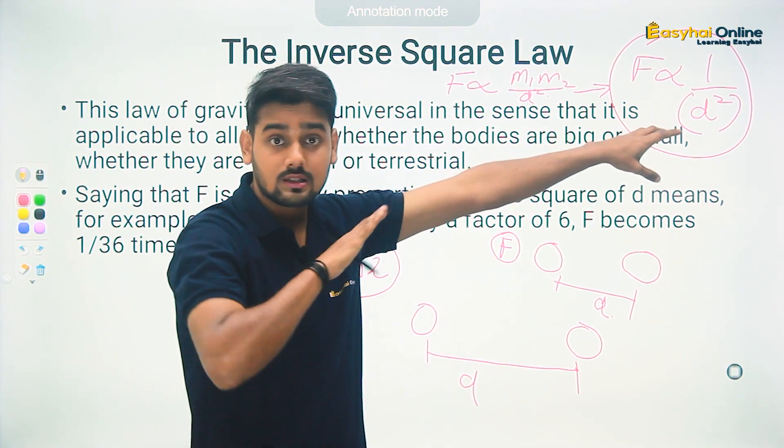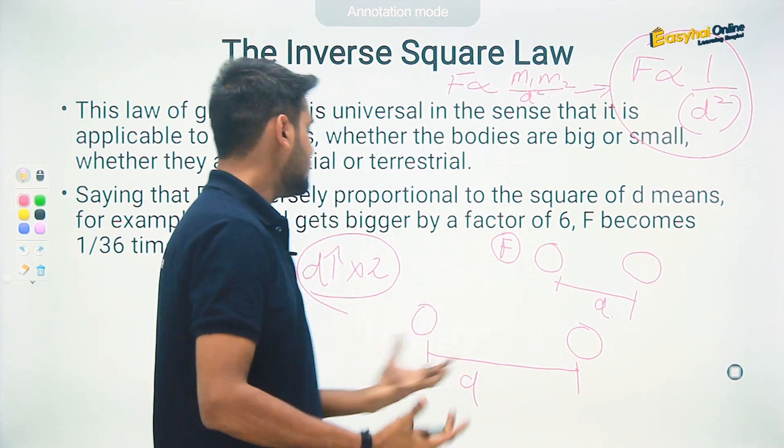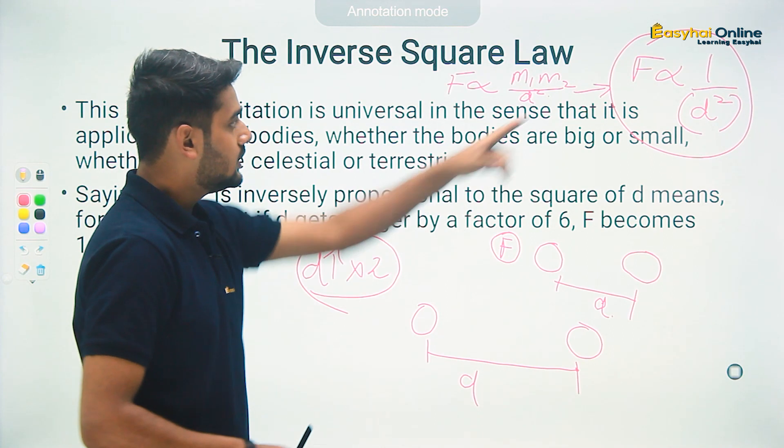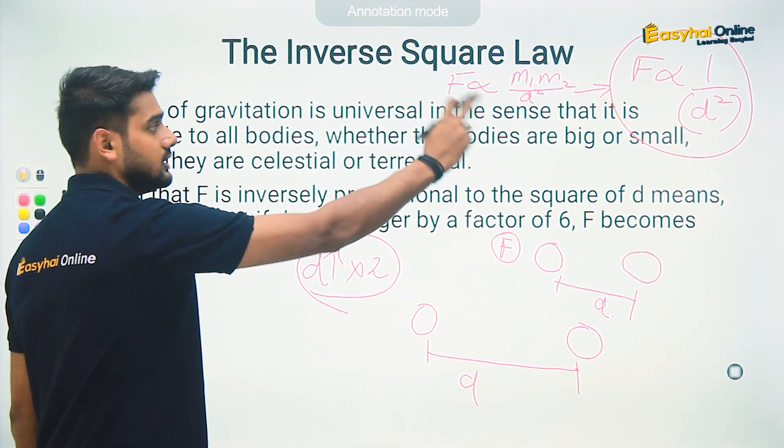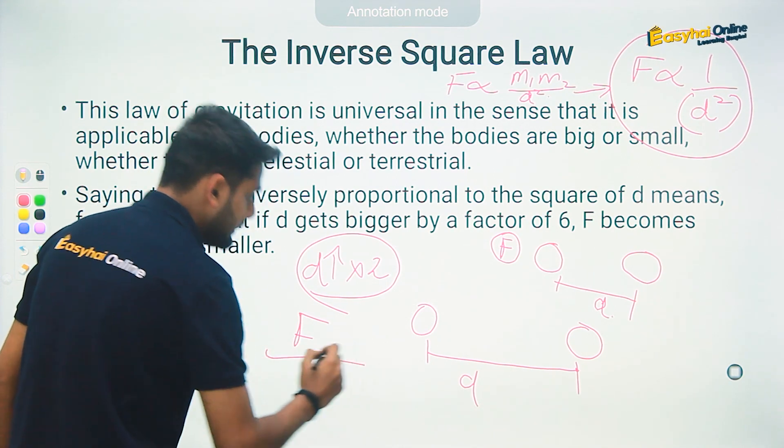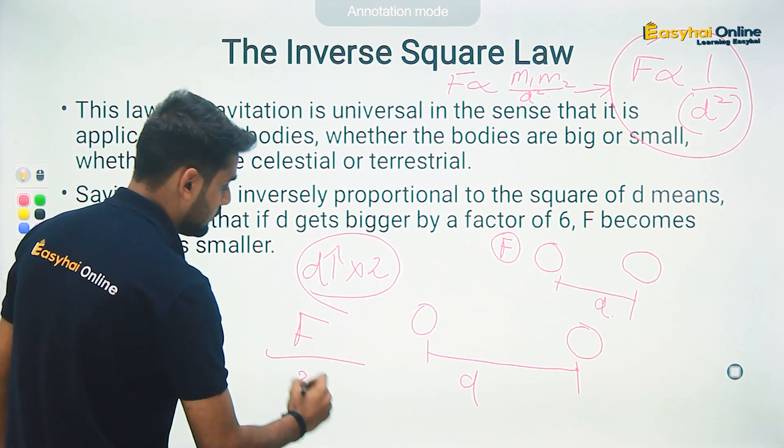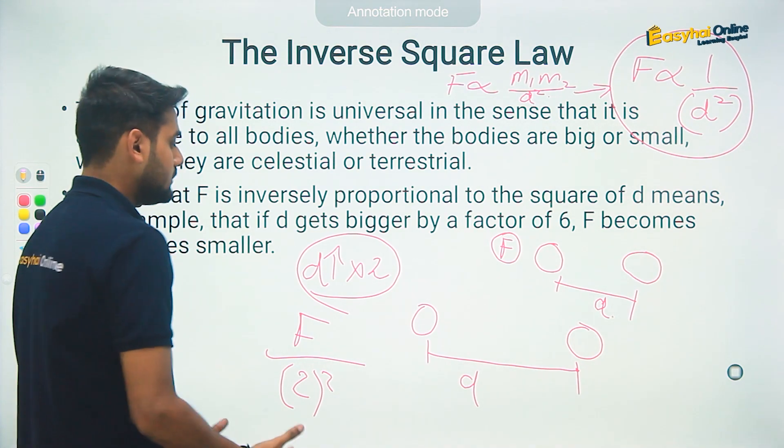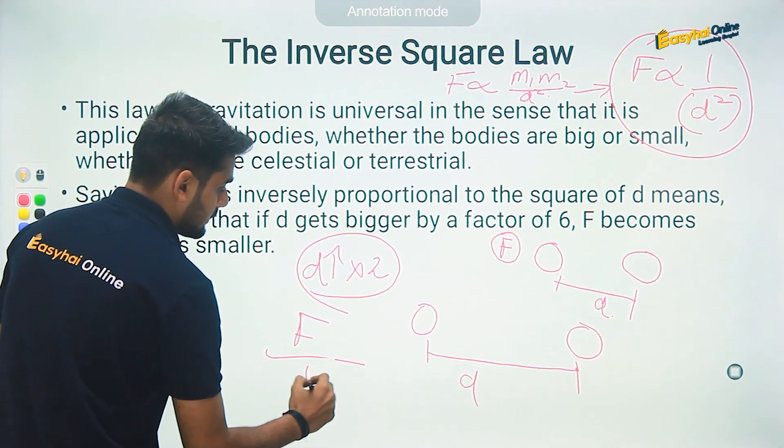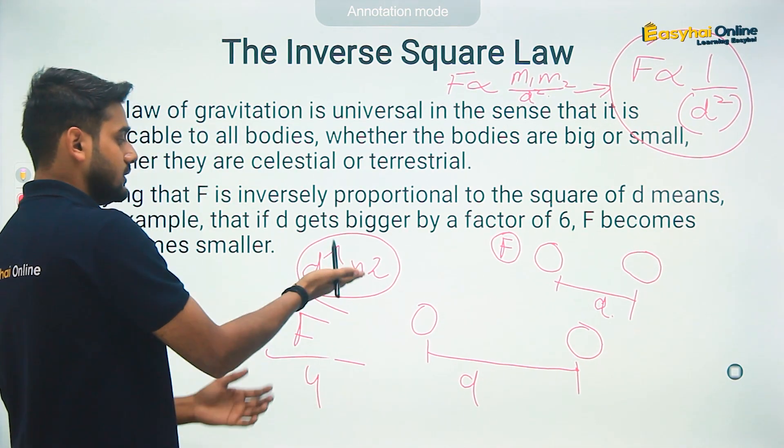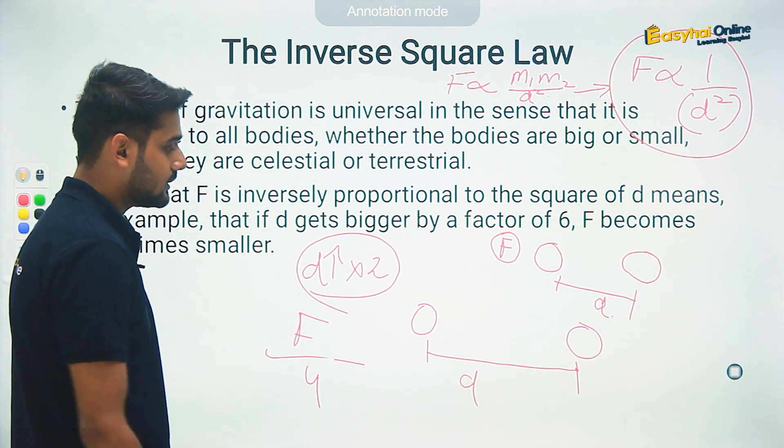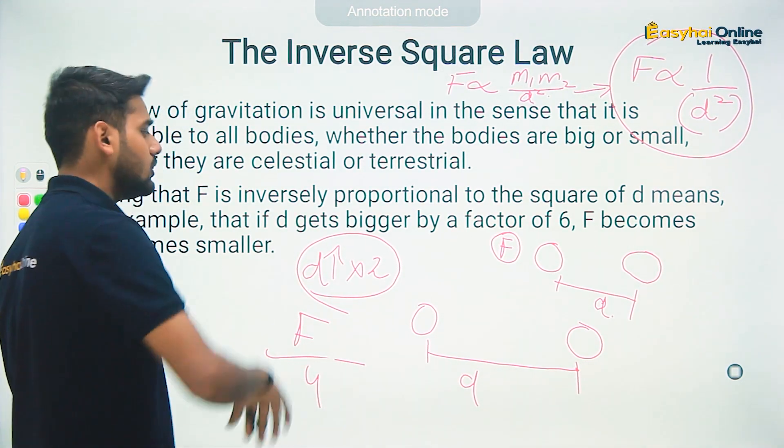But the point is this quantity is not in its absolute form - this is the square of distance, not only distance. Therefore, if the distance has increased by a factor of two, there's an inverse relation but it's an inverse square relation. Therefore, the force will now get decreased by a factor of two squared - that means the force will have decreased by a factor of four. So if distance increases by a factor of two, the force will get decreased by a factor of four.